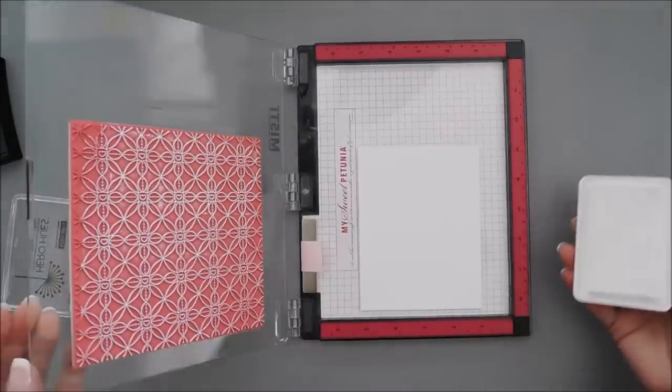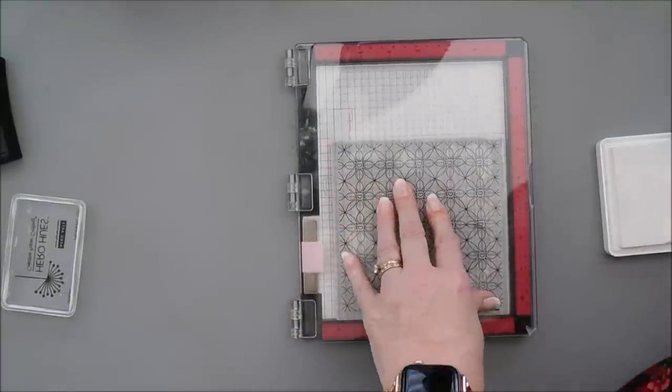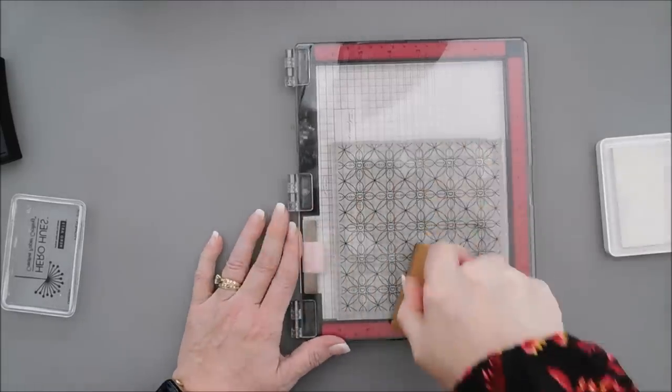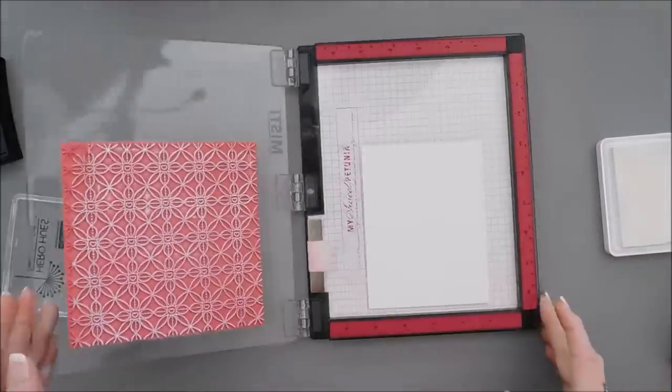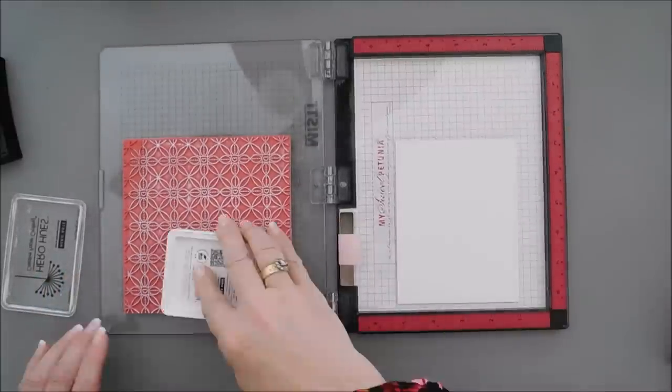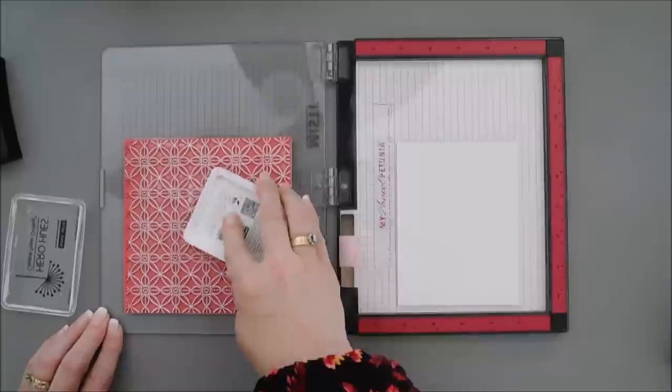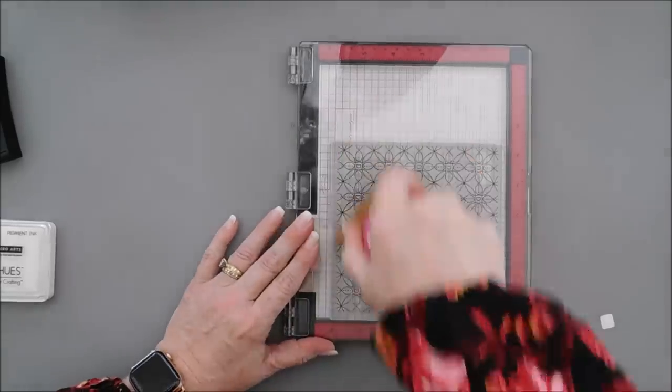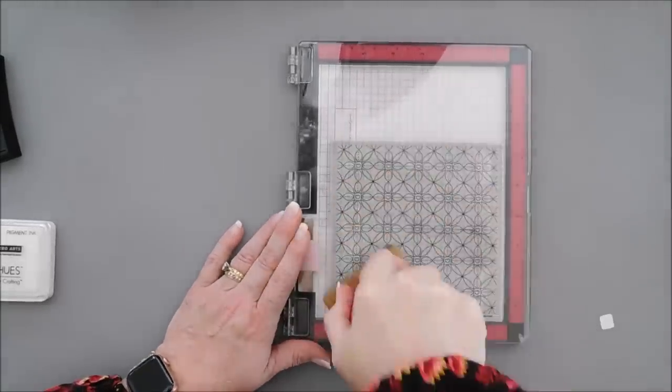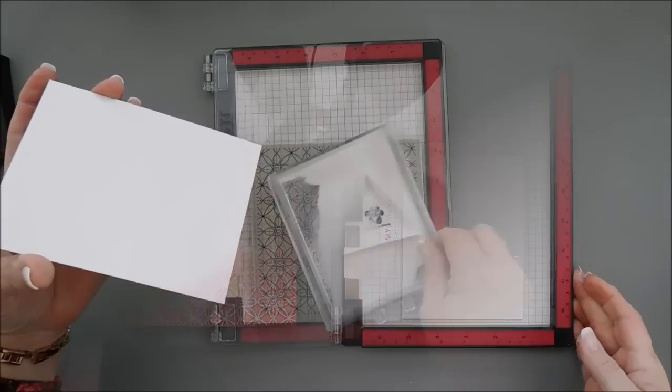And then I'm going to stamp this. I'm going to stamp it one more time. But I'm going to use white embossing powder, so even though you're not going to be able to see the white pigment, I can see it on my red rubber stamp.